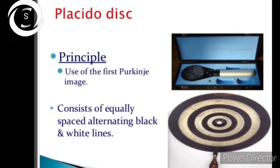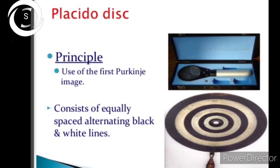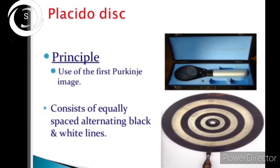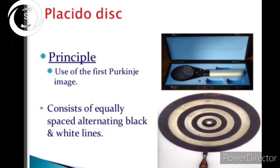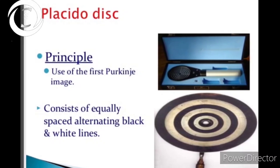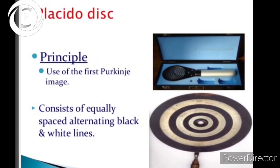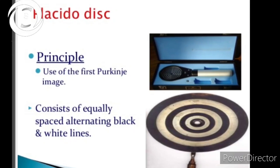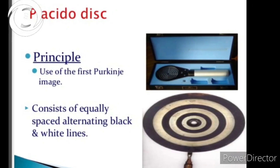As the image from the placido disc is projected on the cornea, some of the light is reflected off the cornea like a mirror. That reflected image reveals the shape of the anterior surface of the cornea.